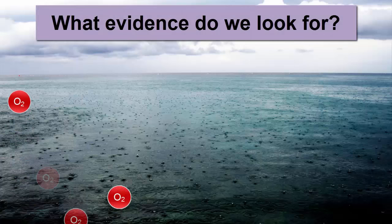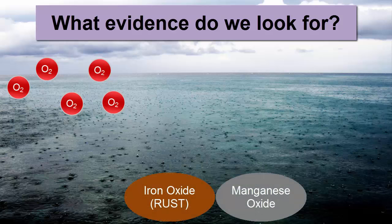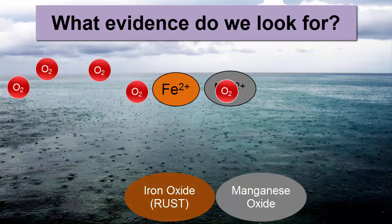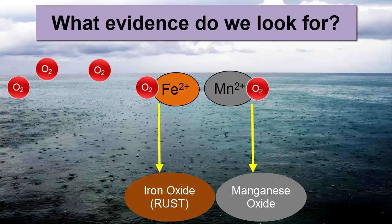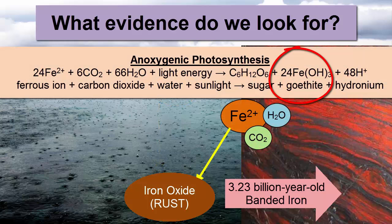What evidence would we look for to tell us oxygenic photosynthesis had evolved? Minerals such as manganese or iron oxides that form through chemical reactions between oxygen gas and either dissolved metals in the oceans or metals in weathering surface rocks on land. While as far back as 3.23 billion years ago there appeared to be small localized precipitations of iron oxide minerals on the seafloor, now visible in layered rocks known as banded iron formations, additional evidence suggests those were formed as a byproduct of anoxygenic photosynthesis by bacteria that used iron as an electron donor.